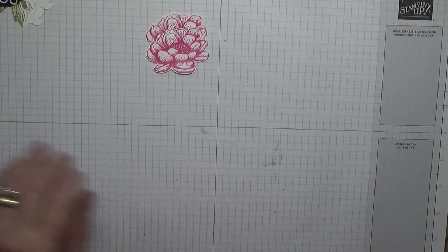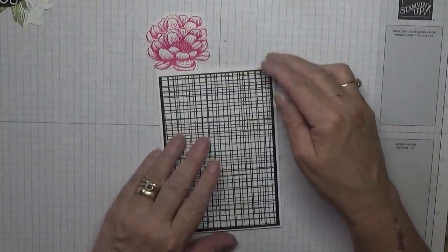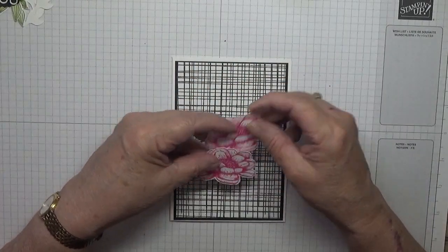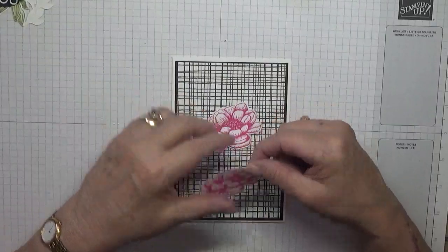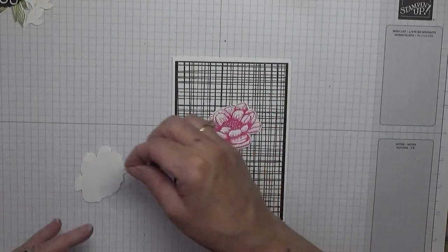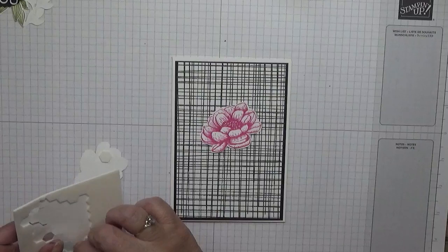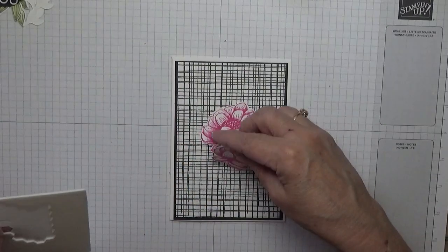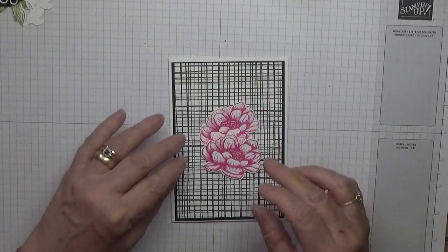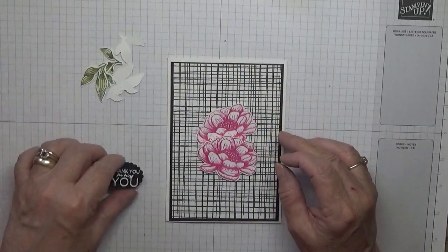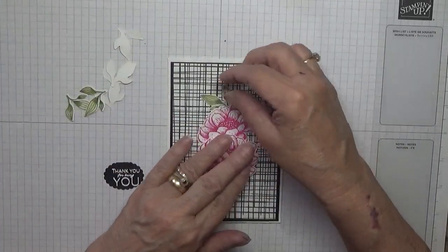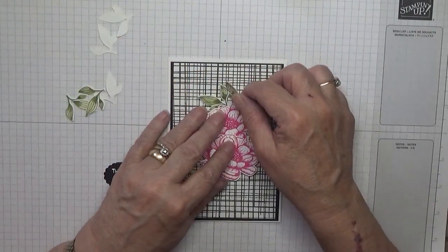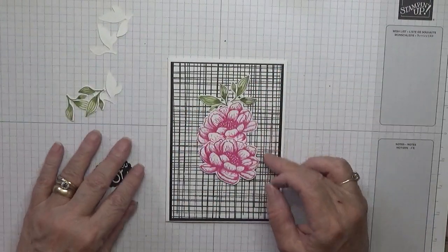And believe it or not, that is it unless of course you're going to do all the leaves. But like I said, I've already done my leaves. This one is going to be glued down and this one's going to have dimensionals. Like that. And then we will place these leaves two at a time in position somewhere around the flower.